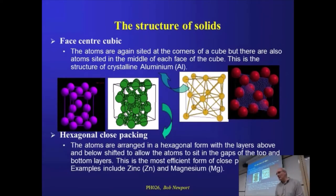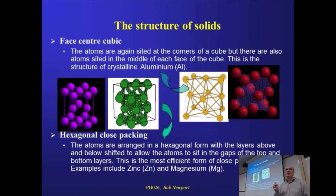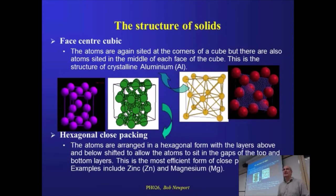Face-centred cubic is another very common one. We start with our simple cubic — a cube with an atom on each corner — but now there's an additional atom in the centre of all six faces. So it's getting a little bit more complicated. There are quite a few metals that adopt this one; aluminium is the example shown. If you look at metals like iron, then depending on the temperature it can either be BCC, body-centred cubic, or FCC, face-centred cubic — it'll change its crystal structure with temperature.